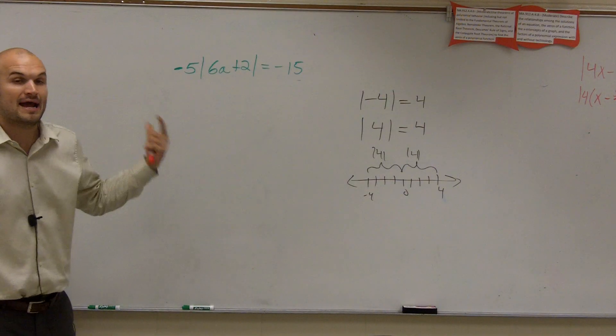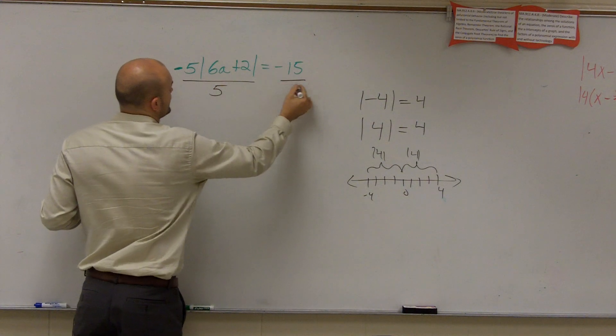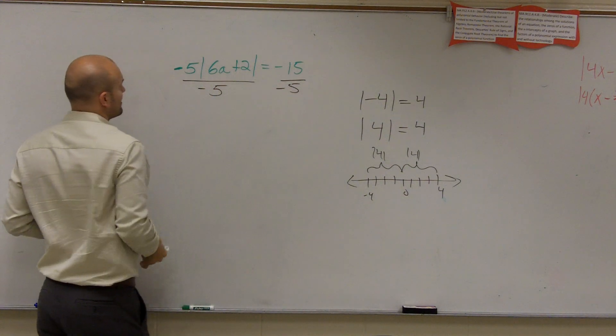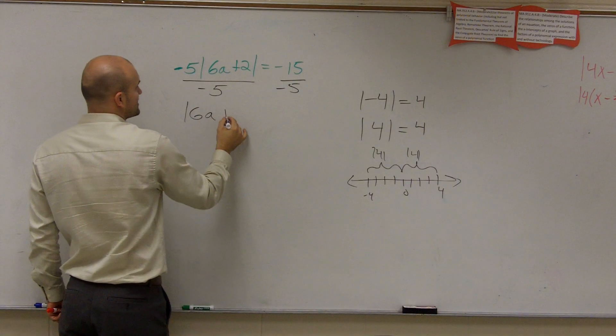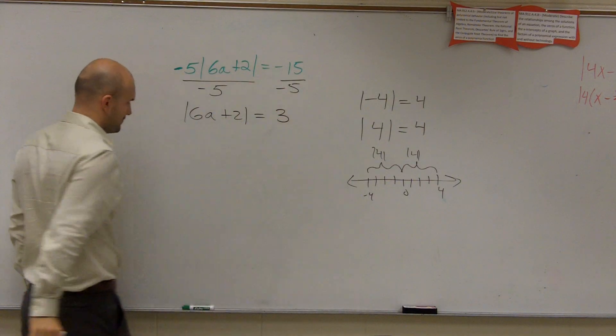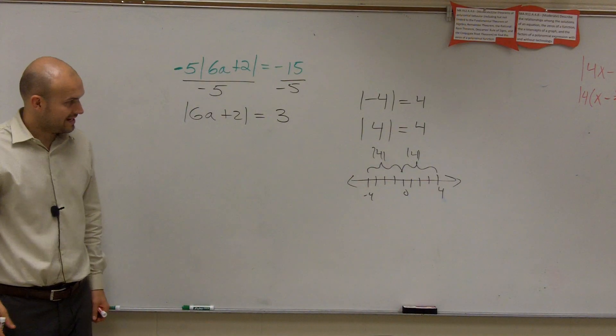I look at this, and I'm going to use my reverse order of operations to undo what's happening to my absolute value sign. I can say, all right, my absolute value sign is being multiplied by negative 5. So I'm going to divide by negative 5. When doing that, I'm now left with absolute value of 6a plus 2 equals positive 3. So now we come into the lovely case.